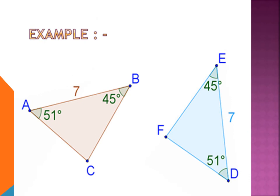Now we are taking an example of this rule. Here, ABC and EFD are two triangles. Angle A is equal to 51 degrees and angle D is also equal to 51 degrees. Similarly, angle B and angle E are equal to 45 degrees, and AB is equal to DE, which is 7 cm.